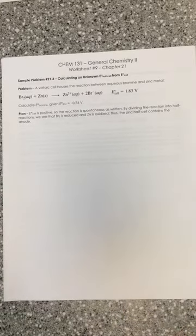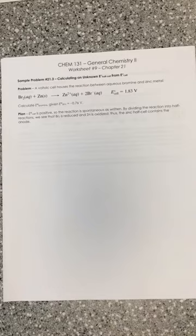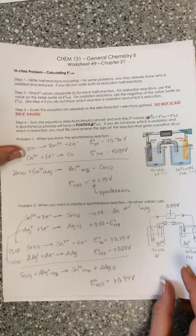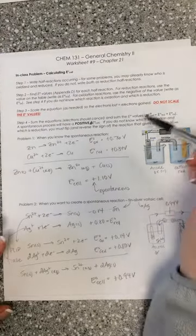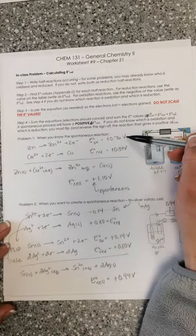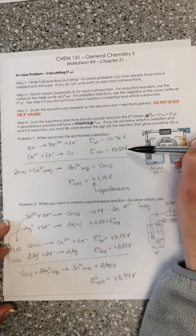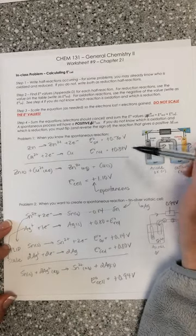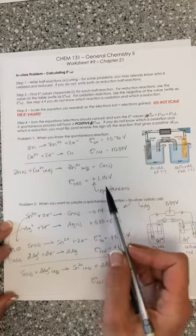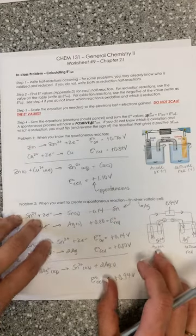So sample problem 21.3 is kind of a variation on the theme of what we've been doing in our previous in-class problem. In our previous problem we used two known oxidation and reduction potentials in half cells to figure out what the E cell would be for a spontaneous voltaic cell.